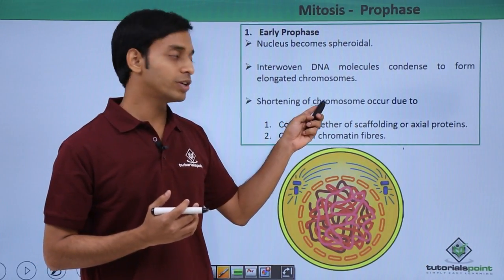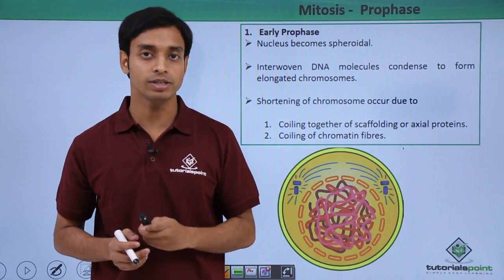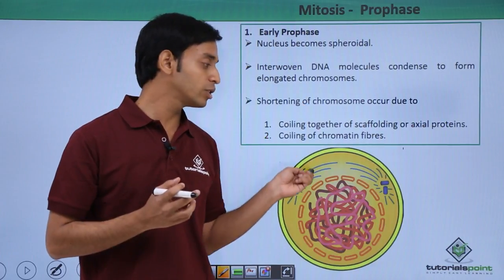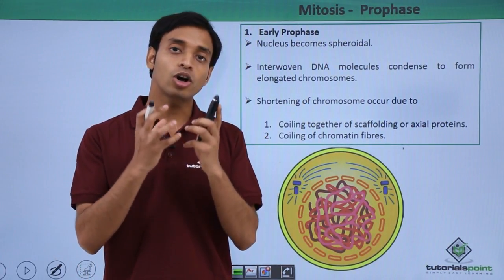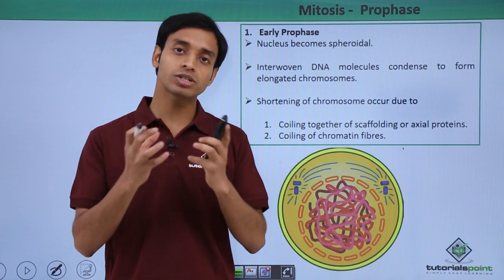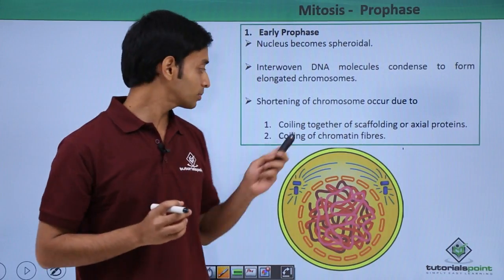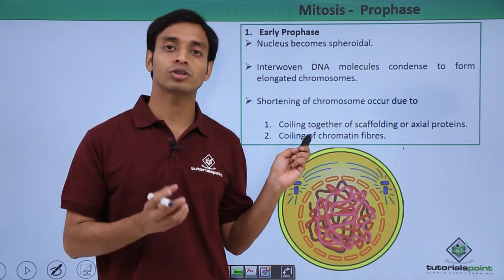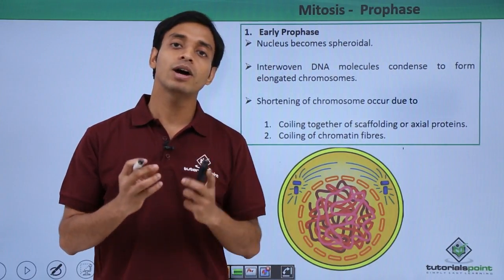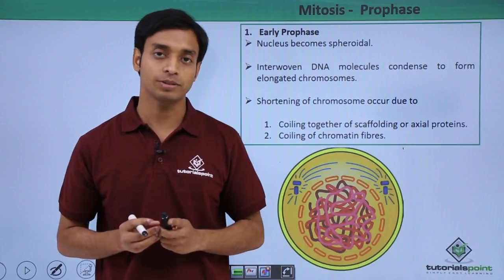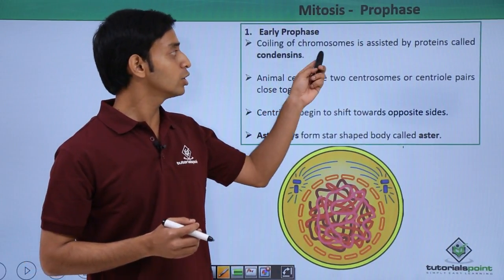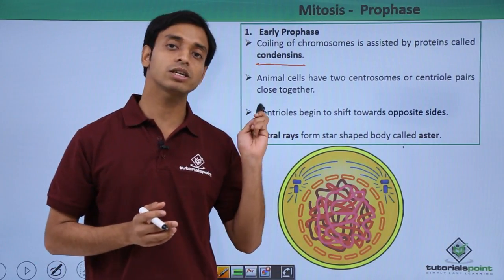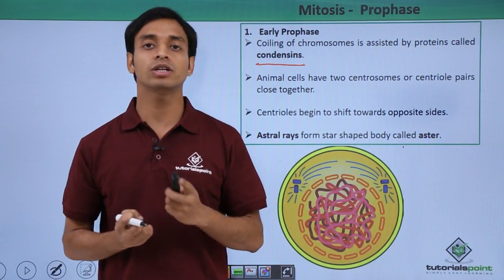The shortening of the chromosomes happens mainly because of two important reasons. The first is the coiling together of the scaffolding or axial proteins — many protein molecules associated with the chromatin network start folding or coiling together, causing the DNA molecules to also start coiling and attaining a particular structure. The second reason is the coiling of the chromatin fibers themselves. This coiling is assisted by certain proteins known as condensin proteins, which help in condensation of the chromosome or chromatin network.